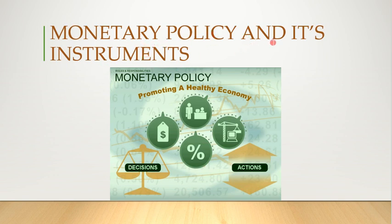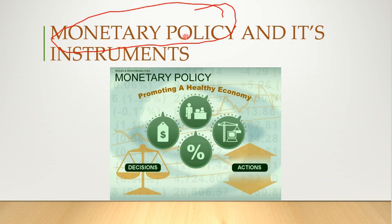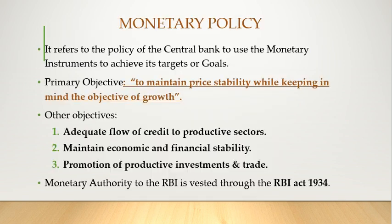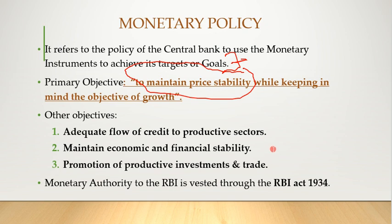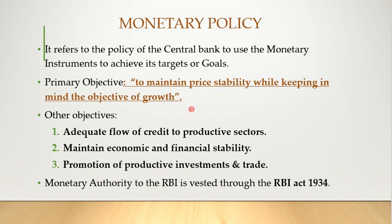Today we are going to discuss monetary policy. It is not all about facts — it's much more about understanding what monetary policy is. It refers to the policy of the central bank to use monetary instruments to achieve its target or goal. RBI's main target — the primary objective — is to maintain price stability while keeping in mind the objective of growth. The purpose of growth belongs to the government; RBI has to maintain price stability.